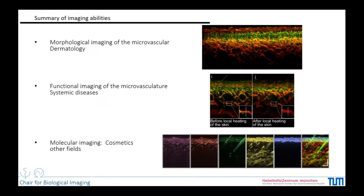As a small summary of imaging abilities: we can do morphological imaging of the microvascular structure, very useful for dermatology; we can do functional imaging of the microvascular network, useful for systemic diseases; and we can do molecular imaging — imaging fat, water, and so on — which may have applications in cosmetics and other fields.